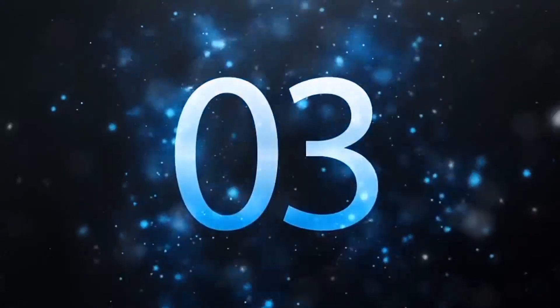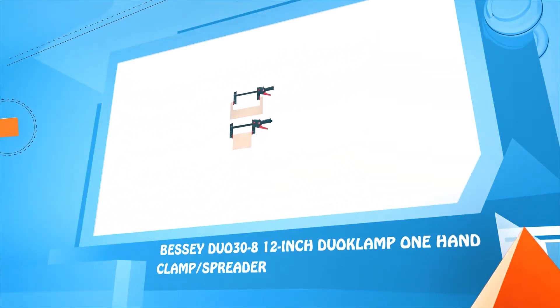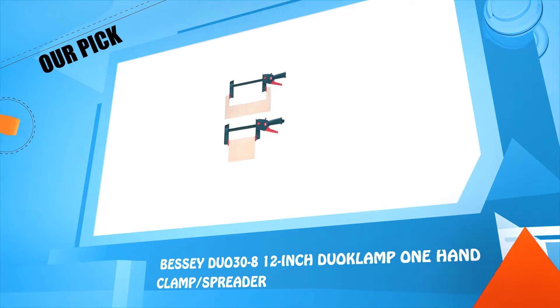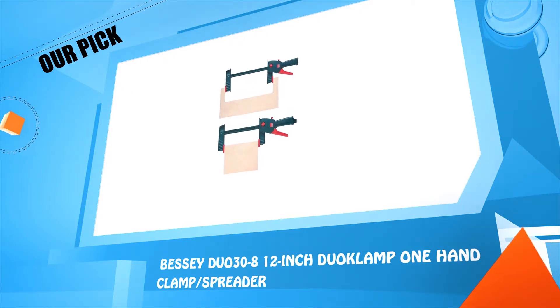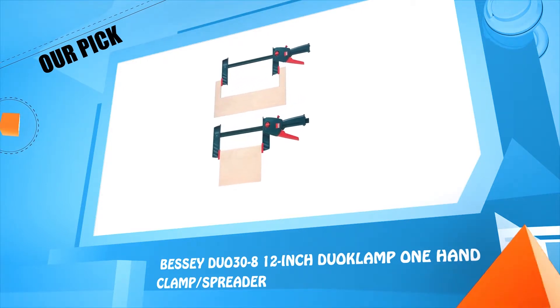Number 3. Bessie TU-038, 12 inches bar clamp, one hand clamp, or spreader.